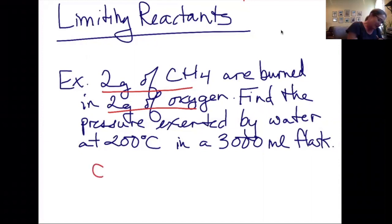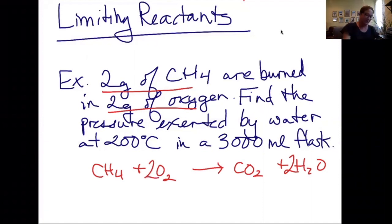So first I'm going to write the reaction. CH4 is burned, so plus O2, and it forms CO2 and H2O. Balancing this reaction, carbon is balanced. I'm going to need a 2 here for hydrogen, and then I have 1, 2, 3, 4 oxygens on the right-hand side, so I'm going to put a 2 there.